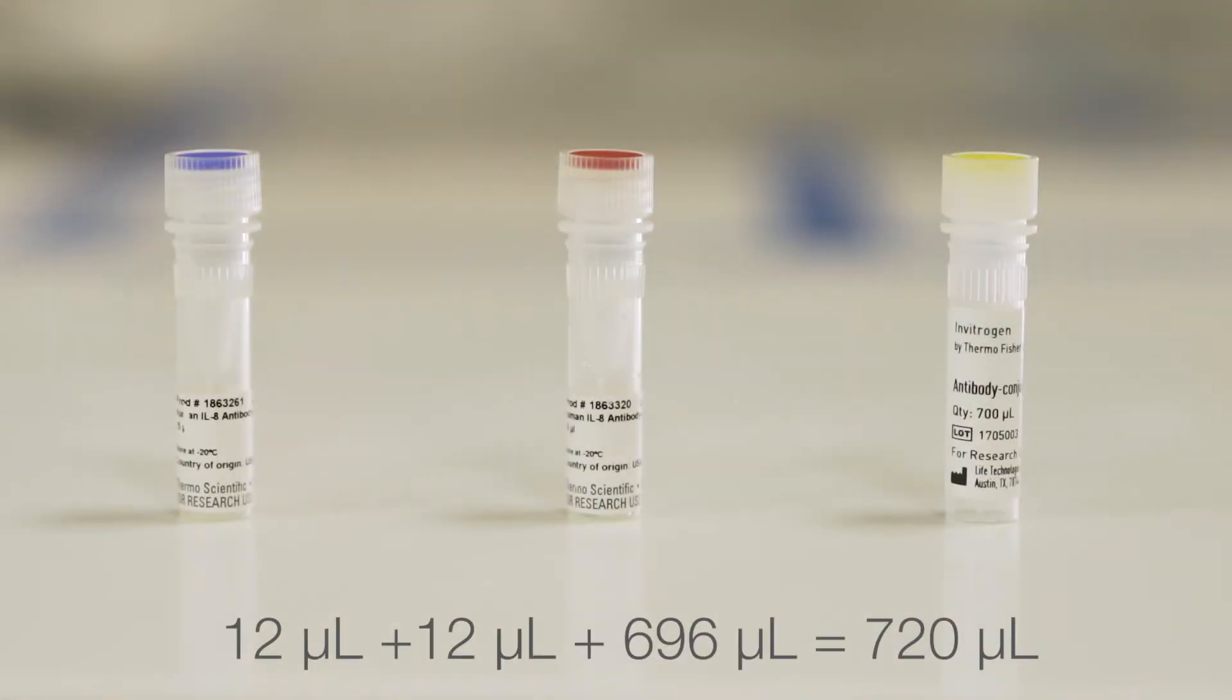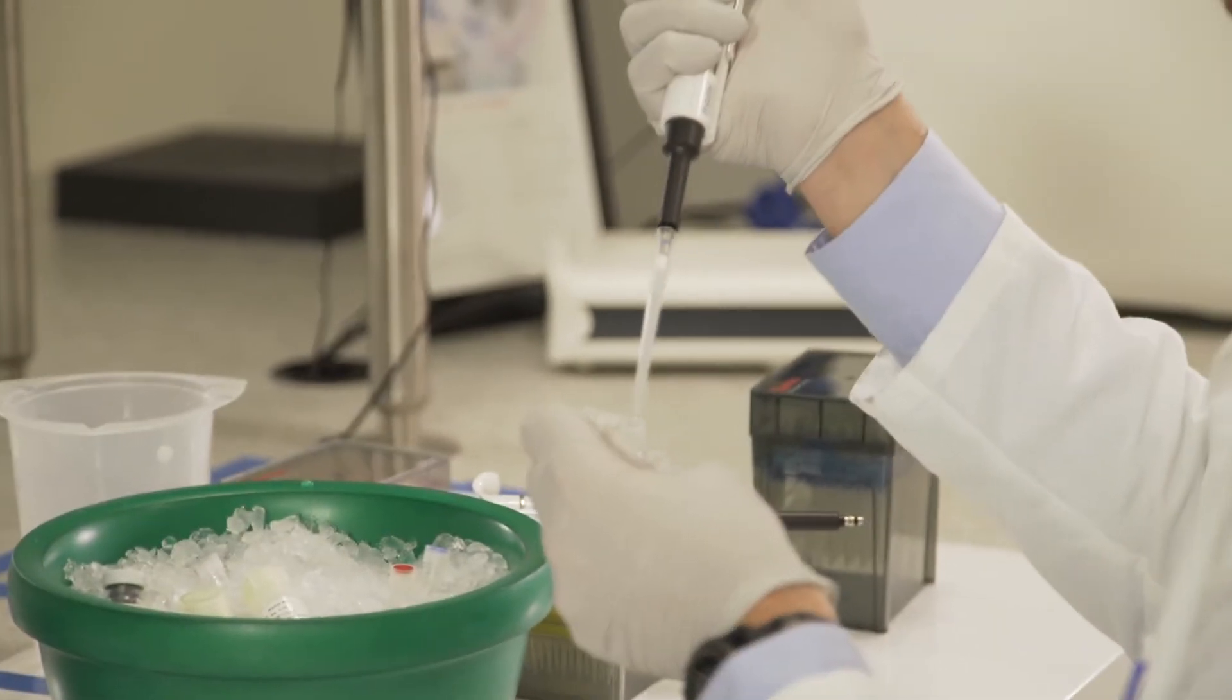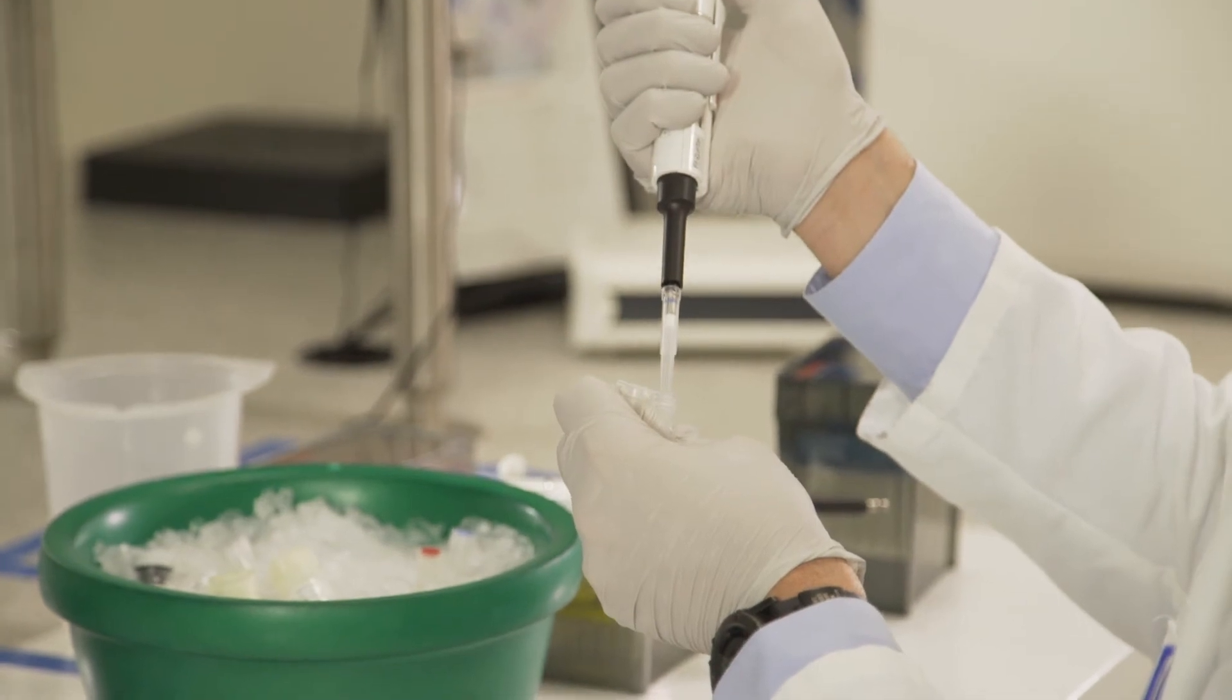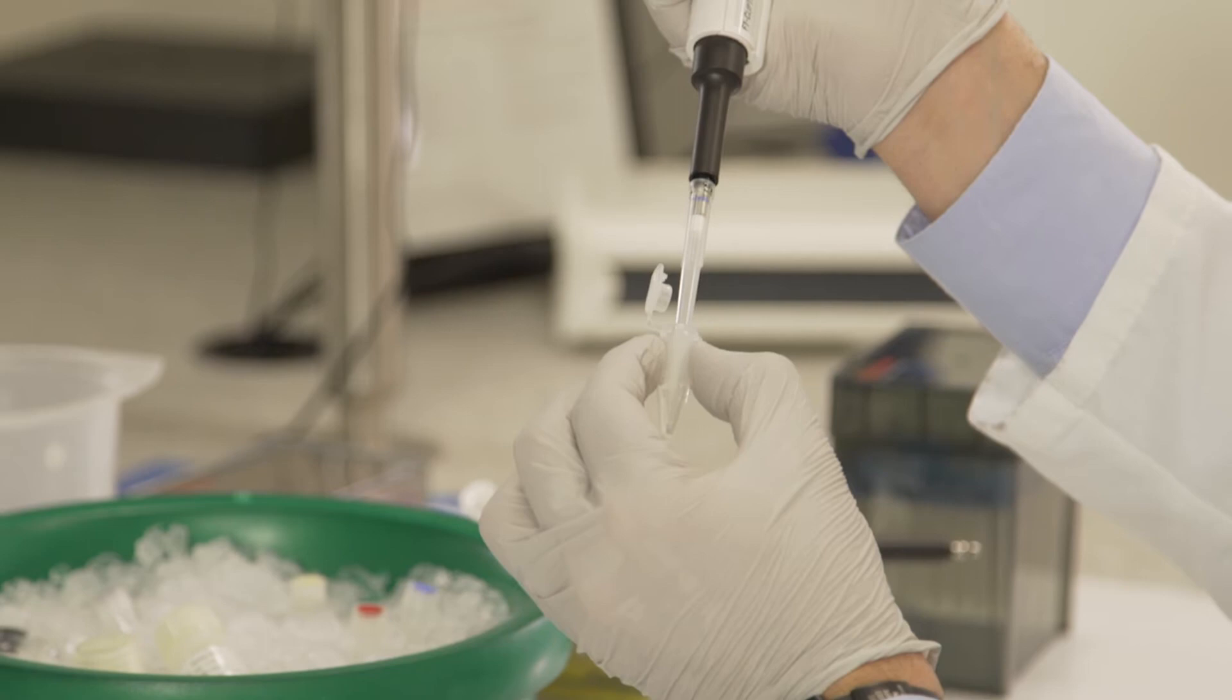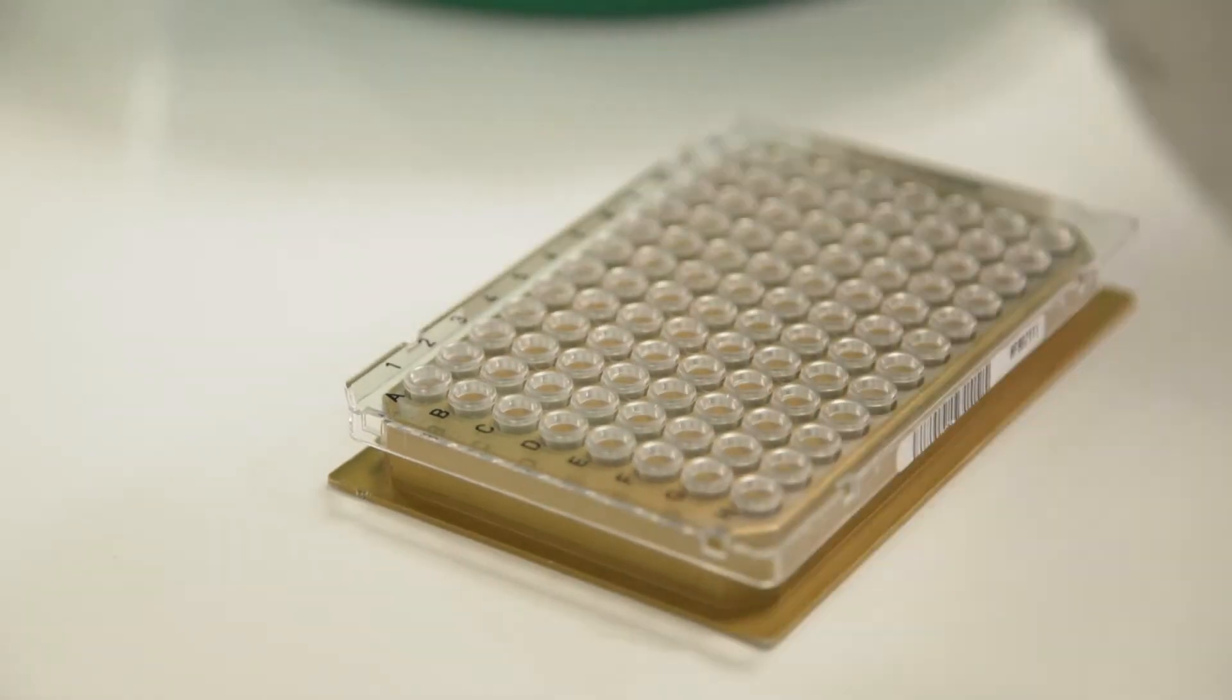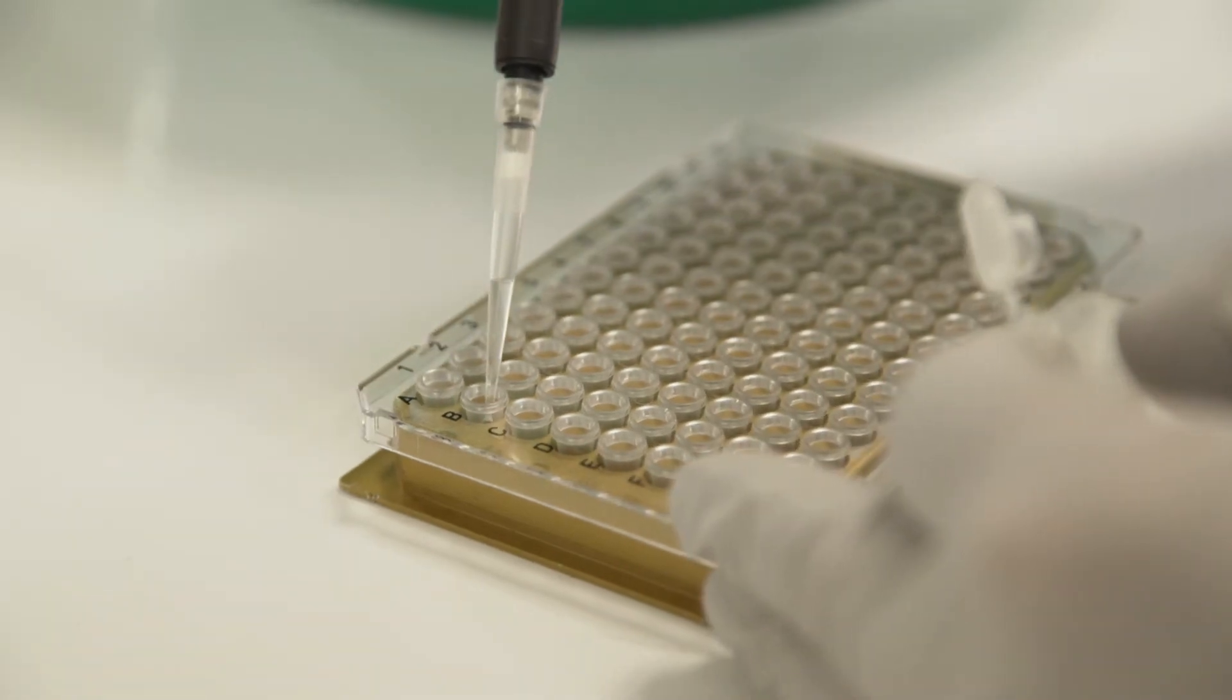During that time, create the antibody conjugate mixture by adding antibody conjugate A and B and the antibody conjugate dilution buffer in a 1.5 milliliter microcentrifuge tube and pipette up and down. Transfer 80 microliters of the antibody conjugate mixture into the designated wells of the working plate.